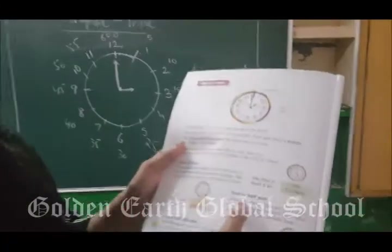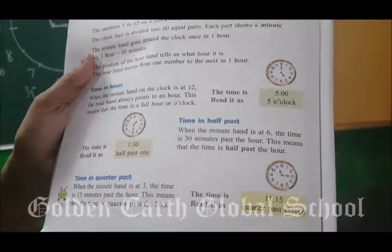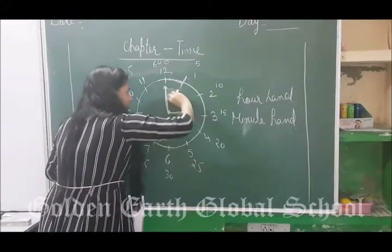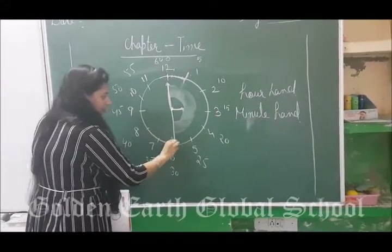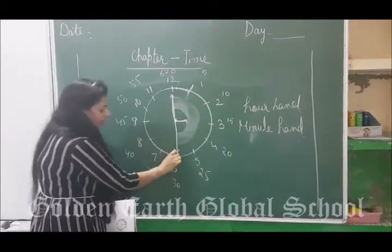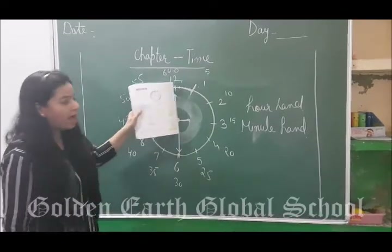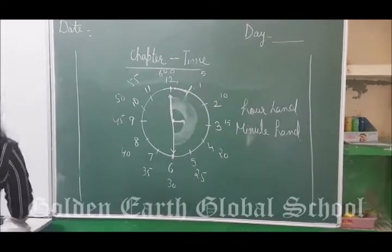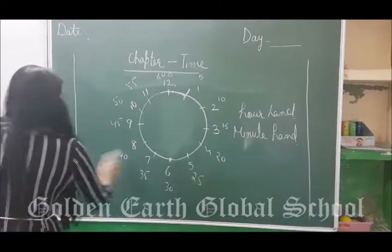Similarly, now I will tell you time in half past. What is the meaning of half past? Half means this complete circle is half complete. Half past means the minute hand has gone halfway around the clock — that is 30 minutes. So half past means 30 minutes have passed.